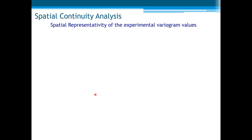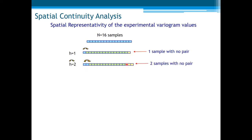Now, let us see spatial representativity of the variogram and how far we can go with distance h. Take this example. This is a very simple example of 16 samples regularly spaced in a row. If we calculate the variogram with the lag distance h equal 1, we come up with one sample at the end with no pair. For h equal 2, we will get 2 samples with no pair. h equal 3, and let's see h equal 8, and we get 8 samples with no pair.